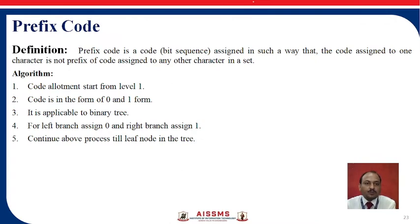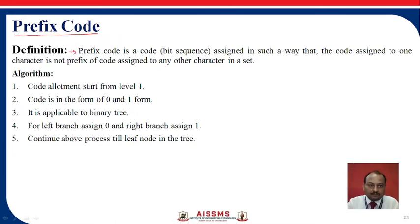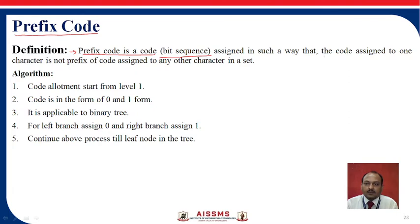This is a most important topic and most of the time in a university exam they have asked questions on this topic — to assign the code to the given tree. First of all, we will see the definition. The prefix code is a code that is called a bit sequence — that 0 and 1 bits — assigned in such a way that the code assigned to one character is not a prefix of the code assigned to any other character in a set.